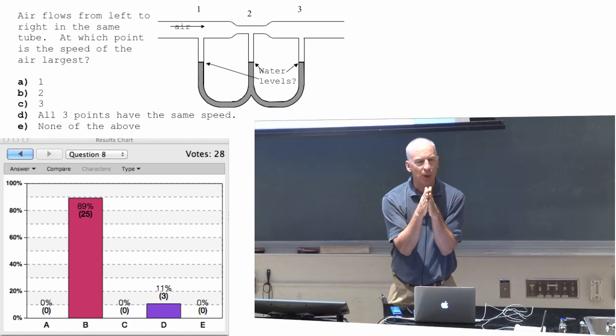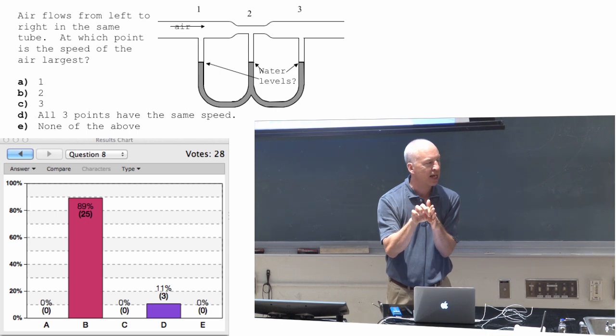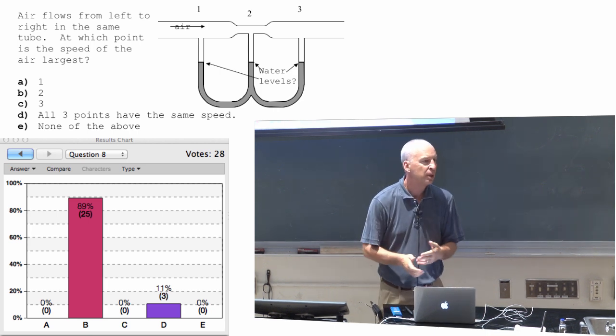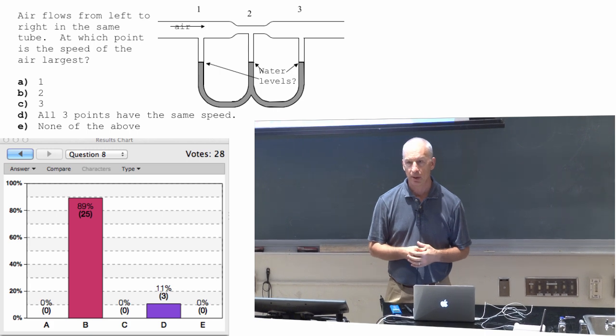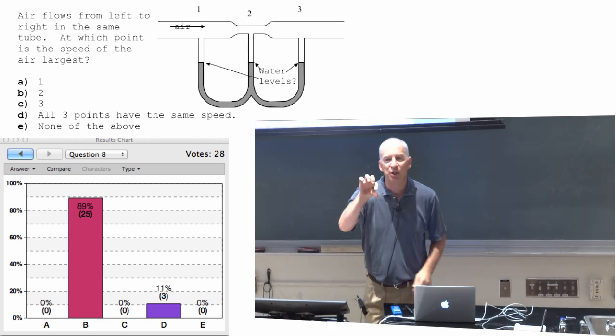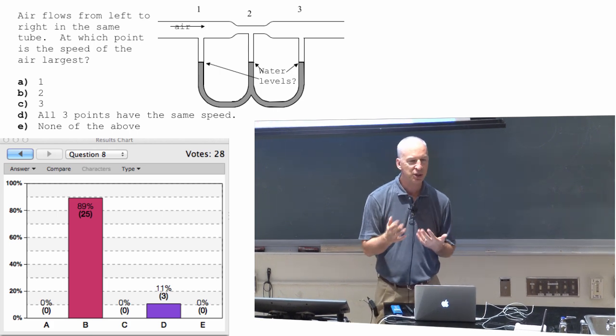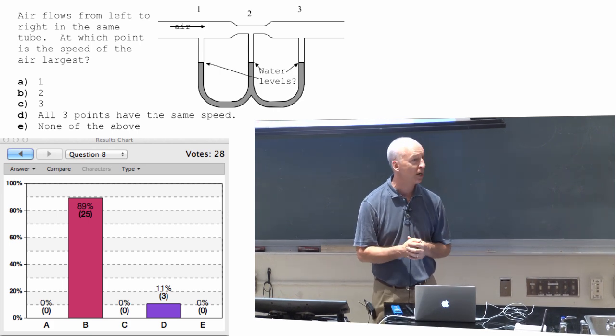In fact, the speed went up in the small cross section, so that the total amount of stuff that got through would be the same. If it went through at the same speed in the smaller space, then not as much stuff would have gone through.